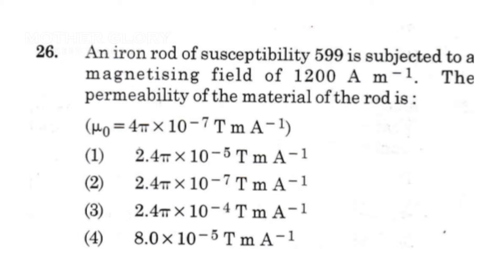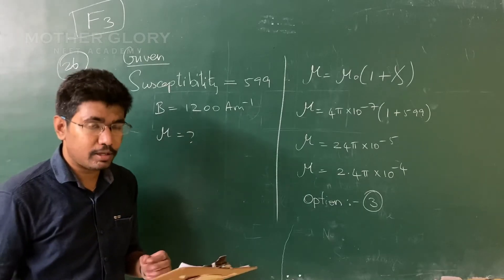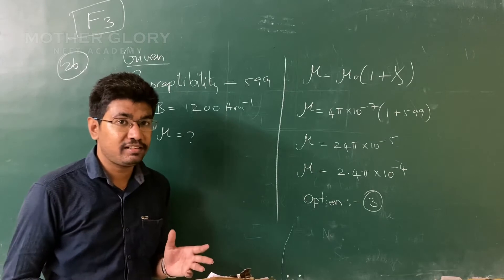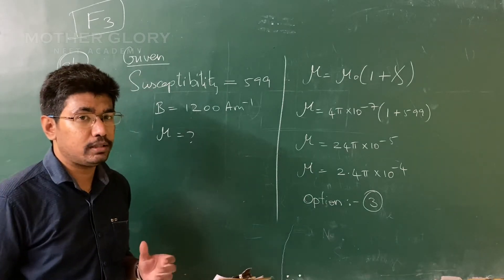Question number 26. An iron rod of susceptibility 599 is subject to a magnetizing field of 1400 Ampere per meter. Find the permeability of the material of the rod.